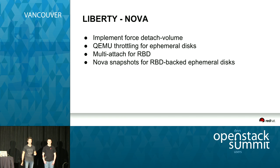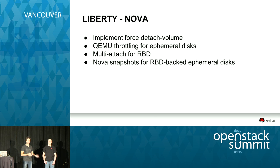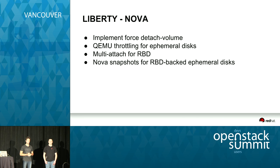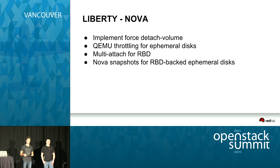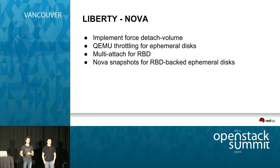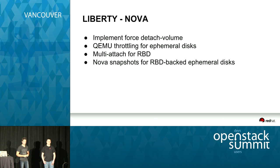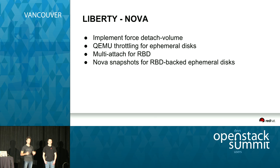Our roadmap for Liberty in Nova: we're going to implement force detaching a volume — it's something more generic that will be implemented into Nova, but we may need to do changes into Ceph as well to support that force detach operation. The use case is that you might have instances running on one hypervisor, the hypervisor dies, and you want to force detach the volume so you can reattach it to another instance. We also have to fix cumulative throttling for ephemeral disks — it's actually a simple patch that has been around for a release but hasn't gotten much attention.